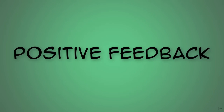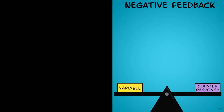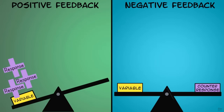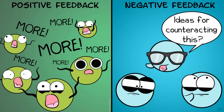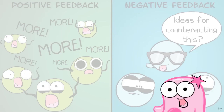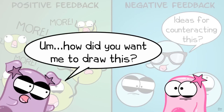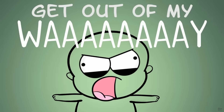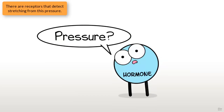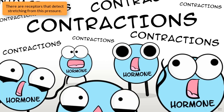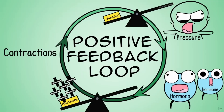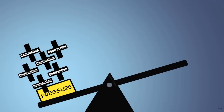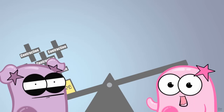What about positive feedback? Positive feedback is when, instead of getting a counteracting response, you intensify the variable — more, more, more. The classic example is human childbirth. When a baby is ready to be born, pressure on the cervix causes uterine contractions. More hormone release leads to more contractions and pressure, which causes more hormone release, which causes more contractions — a cycle that helps get the baby out.